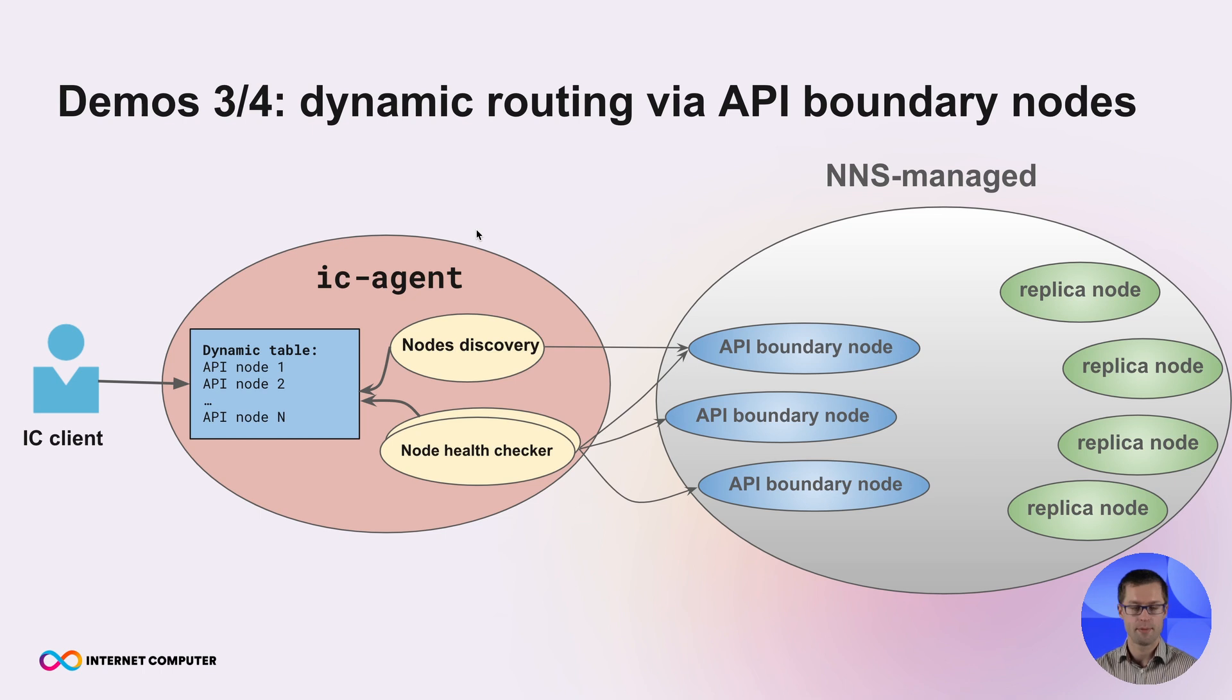That's why we provide you with a very helpful and useful extension in the IC agent, which allows you to do dynamic routing via API boundary nodes. In a nutshell, there are two additional background services which are running in the IC agent. One of them is responsible for discovering existing API boundary nodes, periodically fetches the current topology. And the other service is doing health checks of all discovered API boundary nodes. Combined together, they form a dynamic routing table, which is then used for routing requests. And this dynamic routing table can implement different strategies. For example, it can be latency based or simple round robin strategy or any other custom strategy. Let's dive into the next demo.